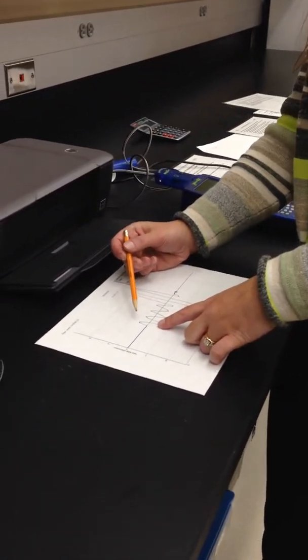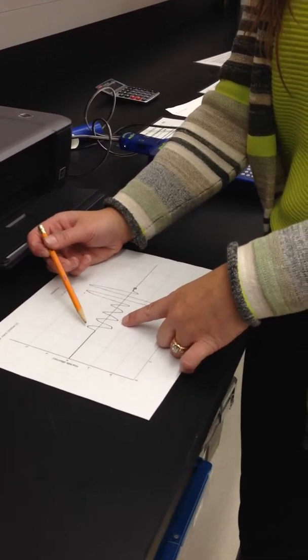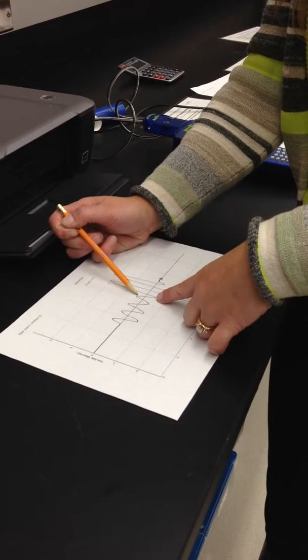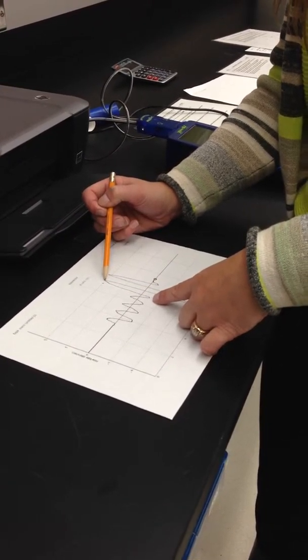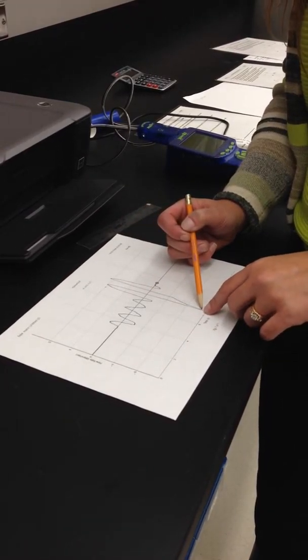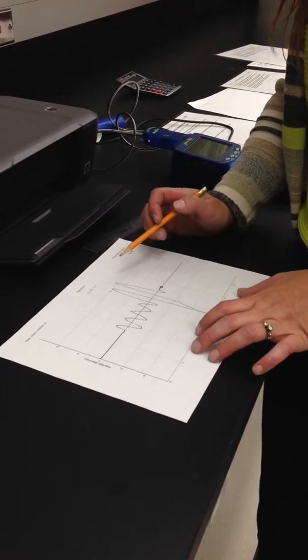When you read your instructions it will tell you to take four normal breaths. And that's what this represents. One, two, three, four. Then it tells you after your normal breath to breathe in as hard as you can and then forcefully breathe out as hard as you can. So that's kind of what I've done here to make this graph.